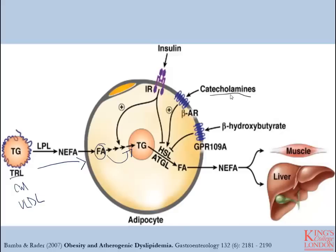When catecholamine levels increase, we see direct stimulation of hormone-sensitive lipase, breaking down the triglyceride and producing fatty acids which are then released into circulation, able to travel both to the muscle and to the liver to be oxidized.